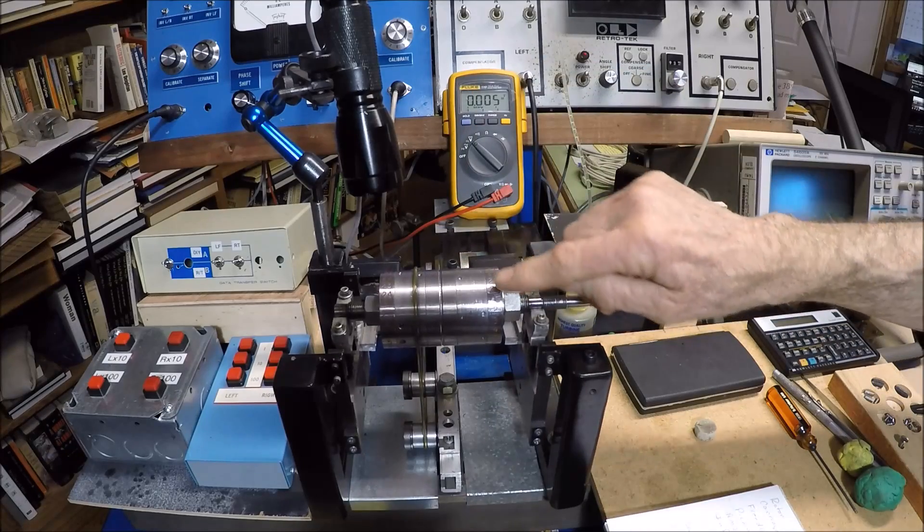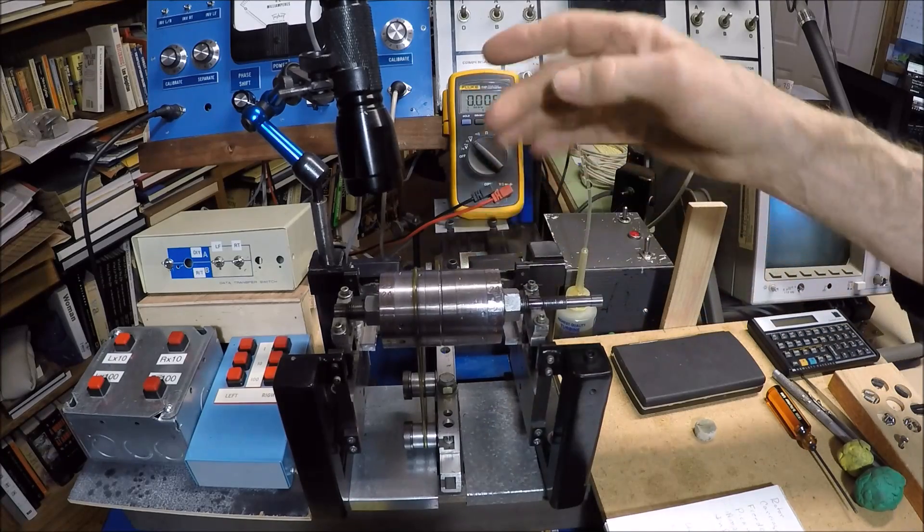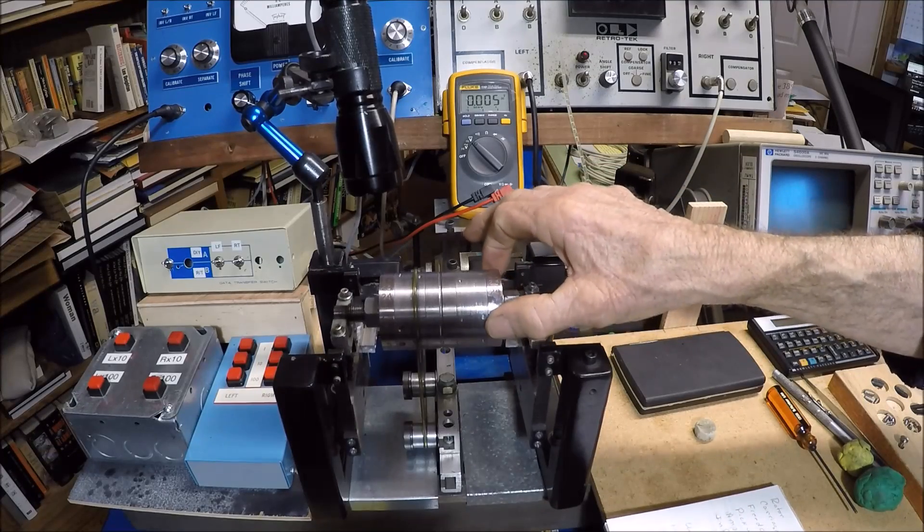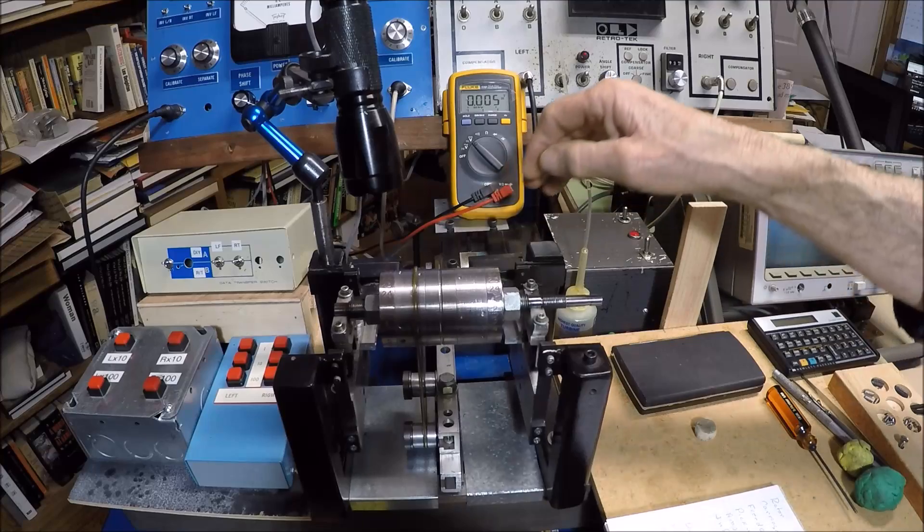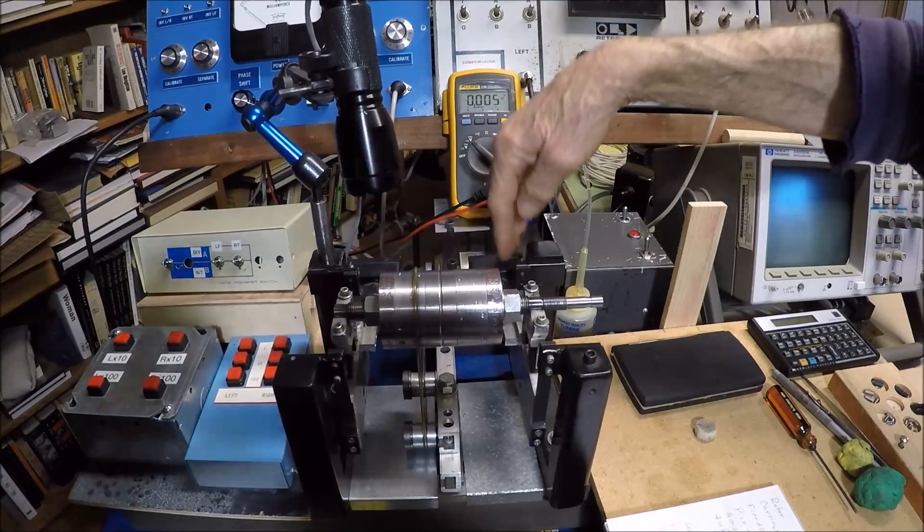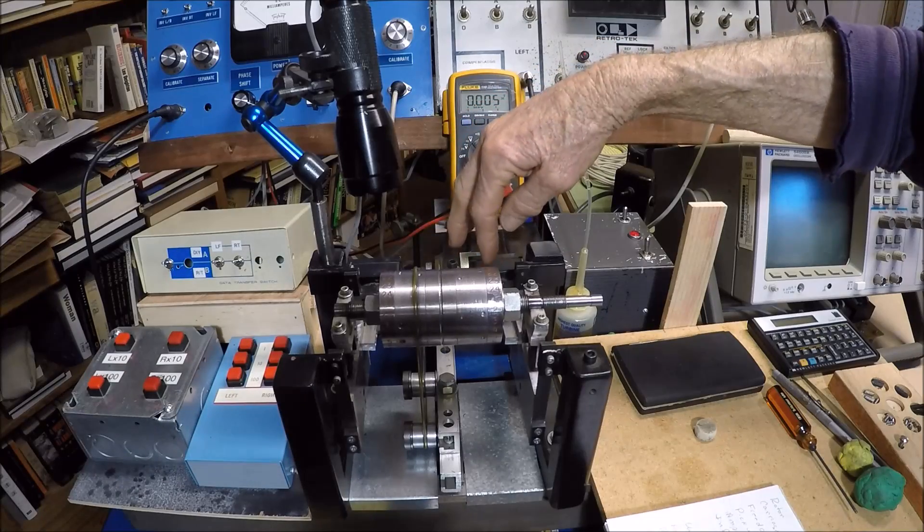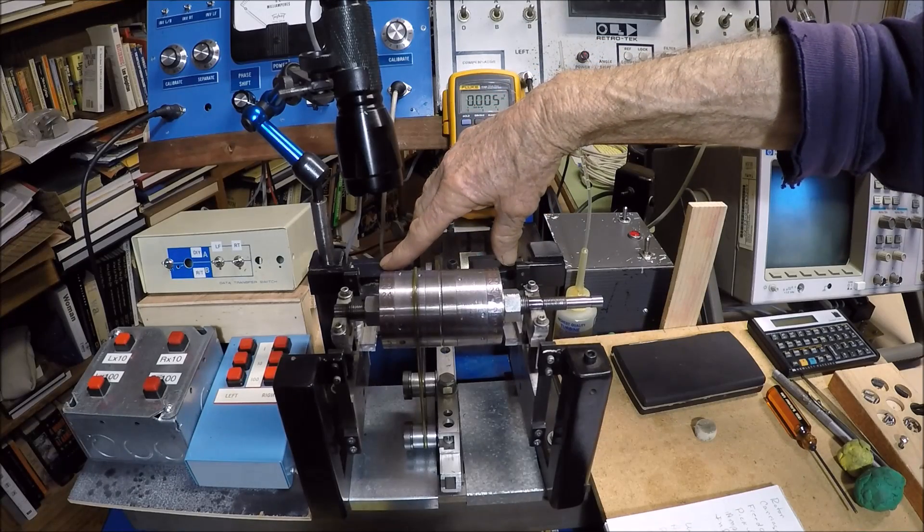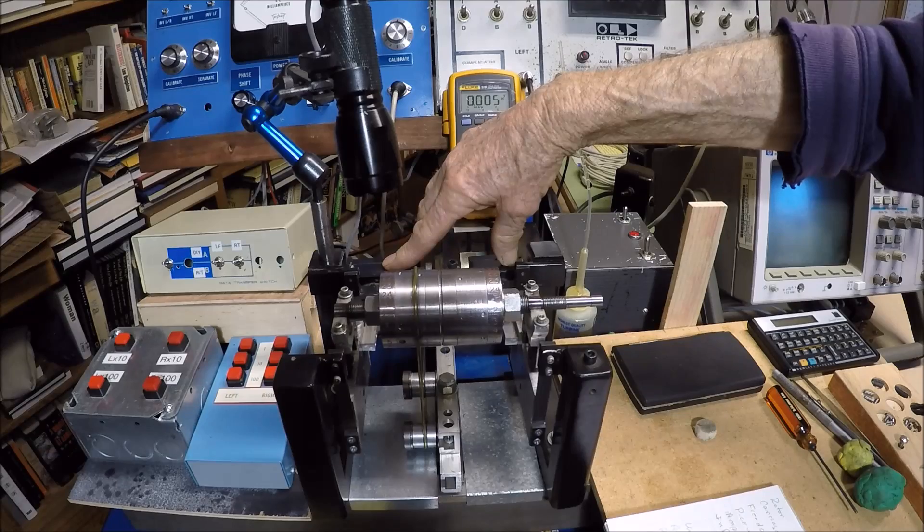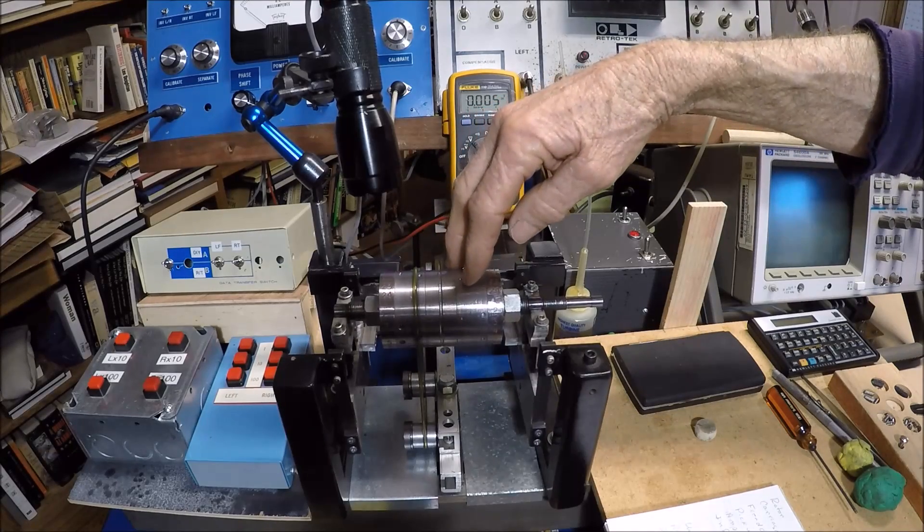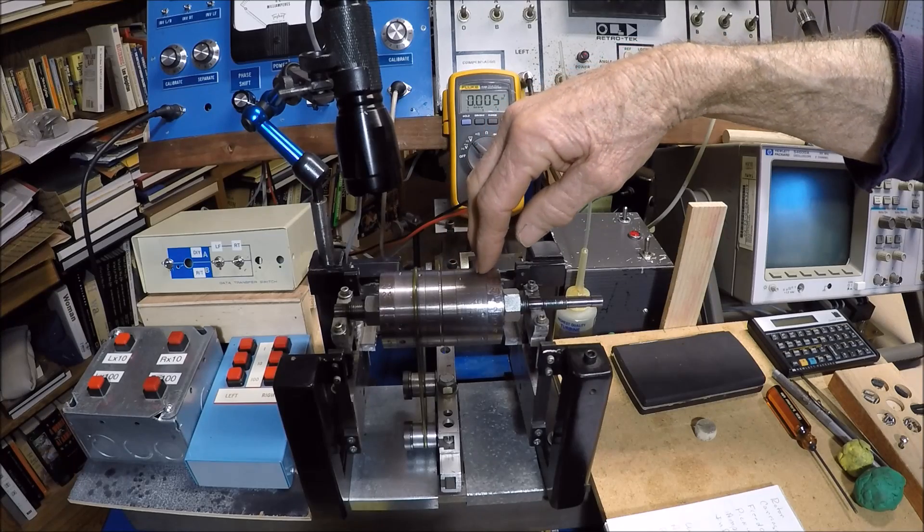So what happens is, if there's a weight unbalance somewhere on this rotor, then it will cause the carriage to move back and forth. A little hard to see, but behind the rotor, there are pickups that are made out of ringer coils from telephones. That's the coil that rings the bell in the old-style telephones.